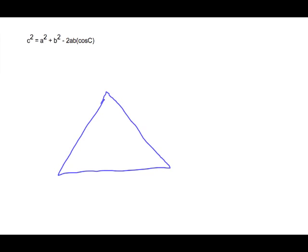It doesn't matter what letters you use — I like to use A, B, and C. As we've said with the sine law, whenever you're labeling a triangle, always label the vertex with capital letters. You take the vertex with the capital letter, look opposite to it — that is the side length of that angle. So angle B is across from side length b, and across from C is side length c.